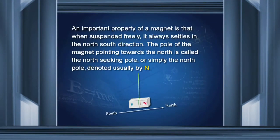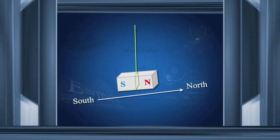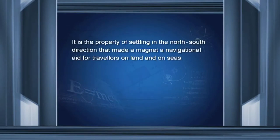The pole which points towards north is called the north pole of the magnet. Remember, each magnet must have two poles; it cannot have one pole. It is this property of settling in the north-south direction that made a magnet a navigational aid for travelers on land and on sea.